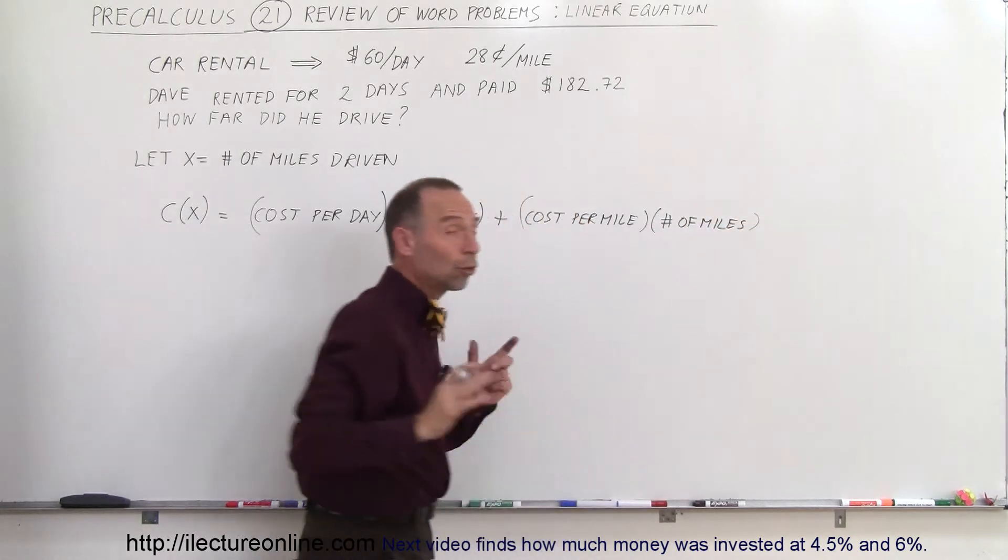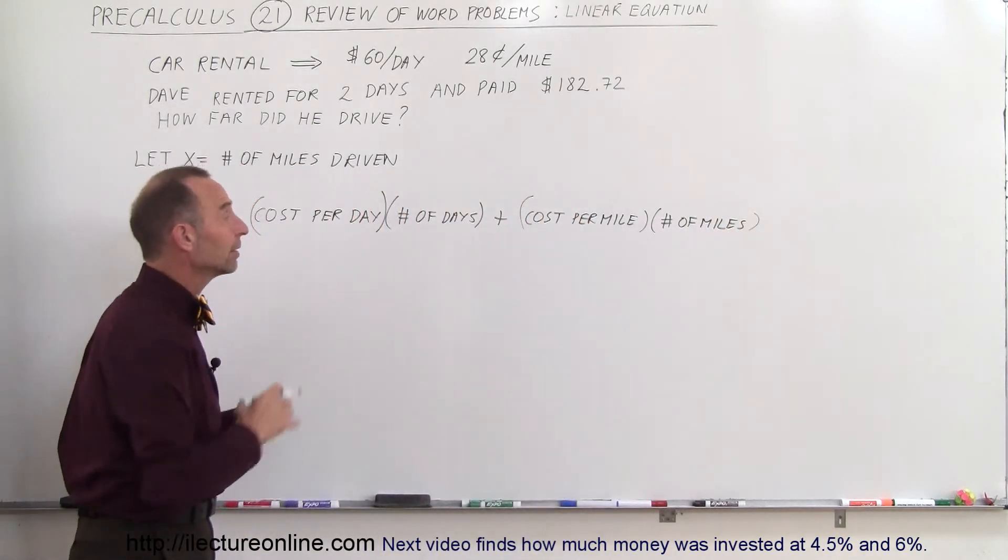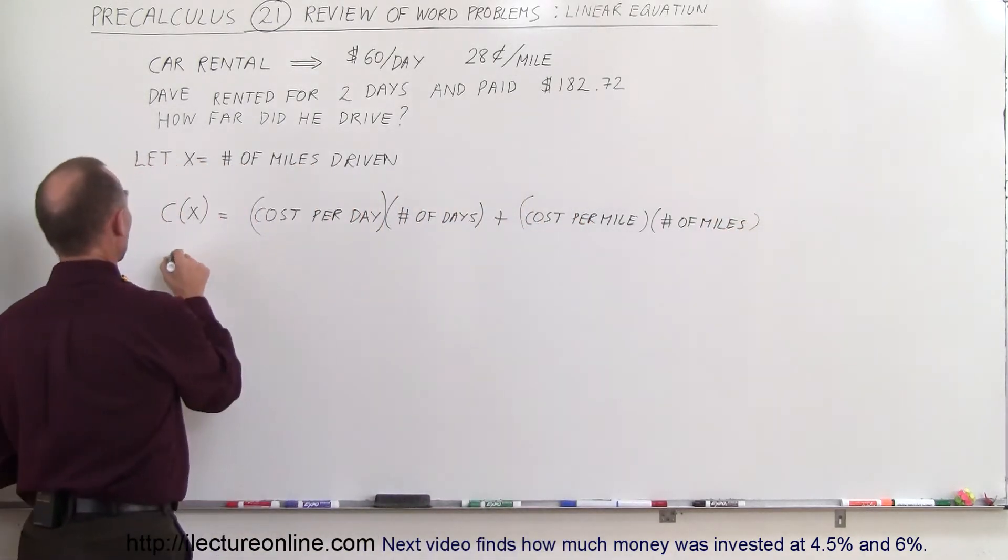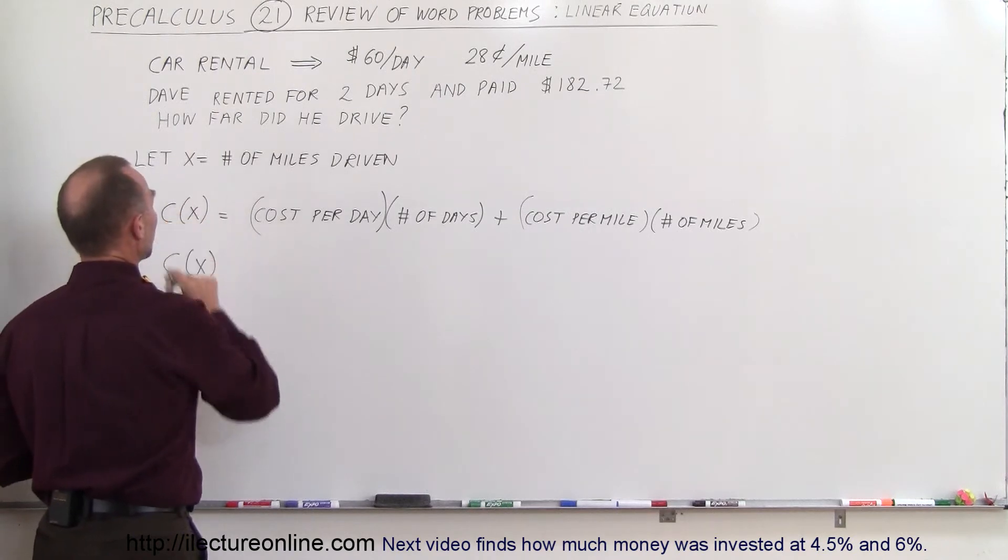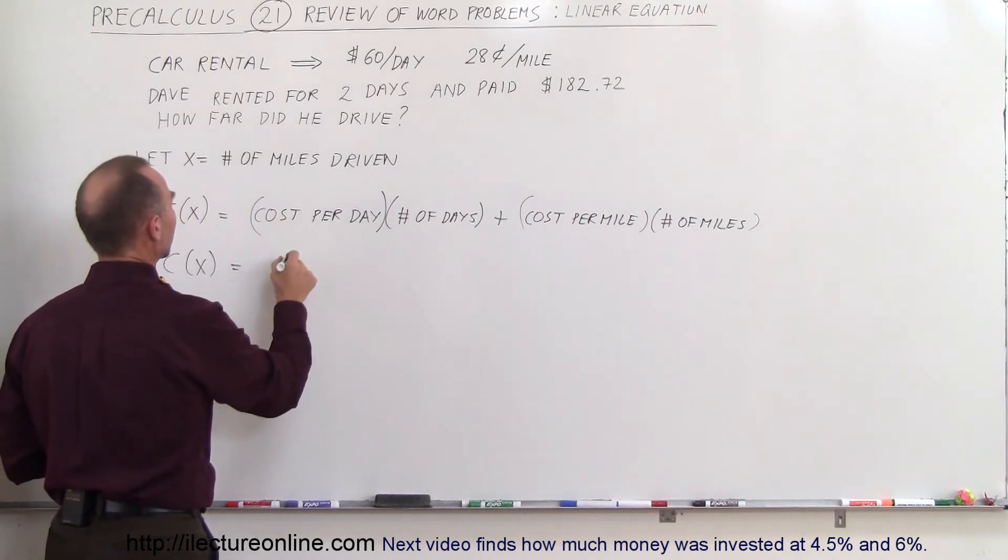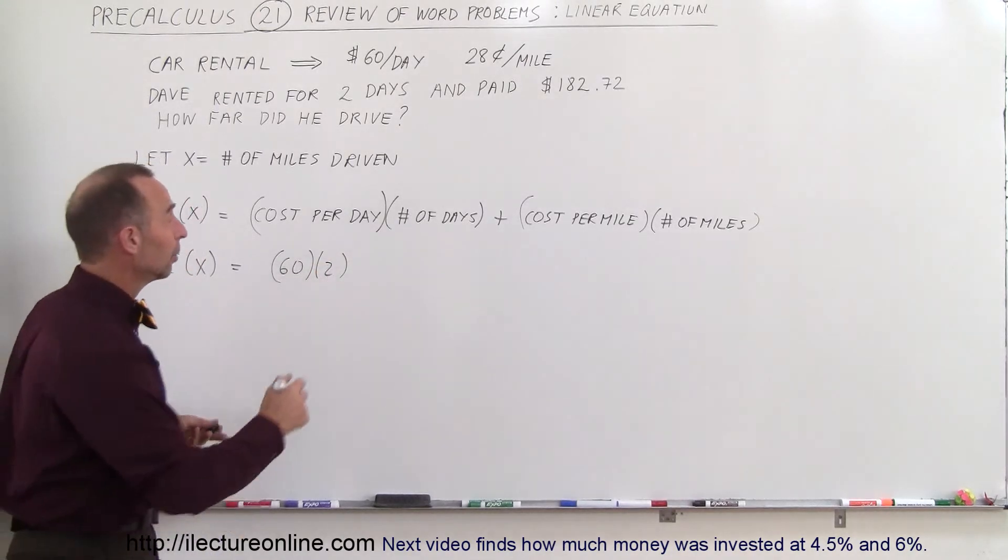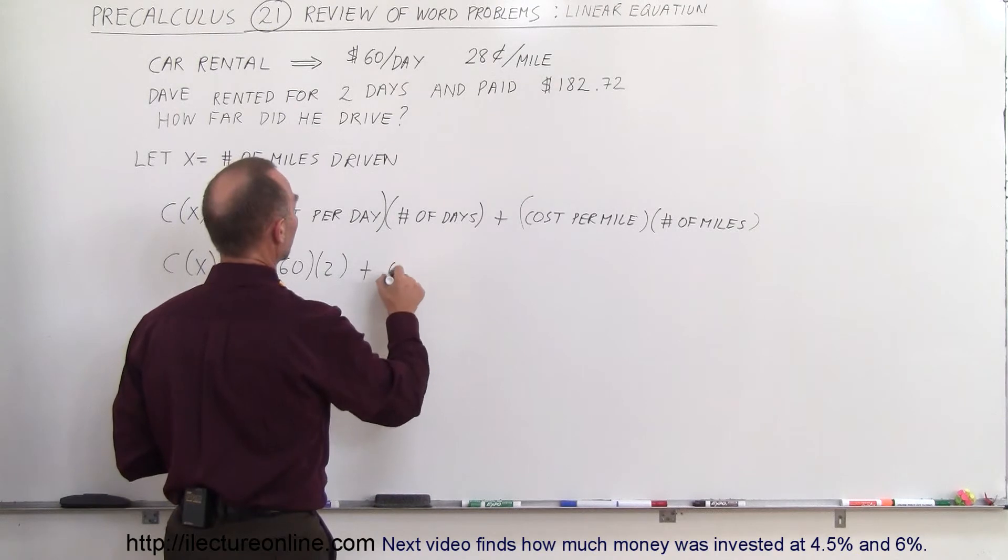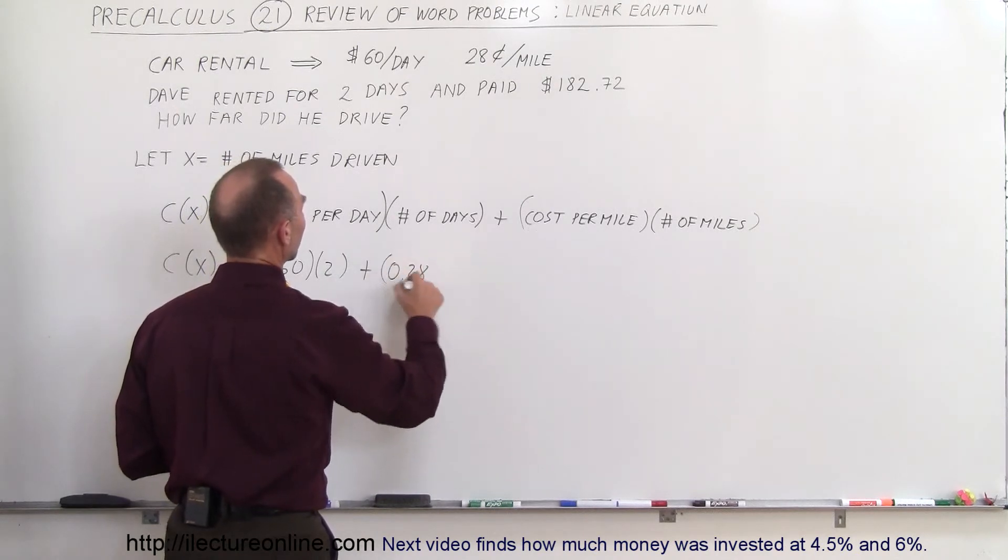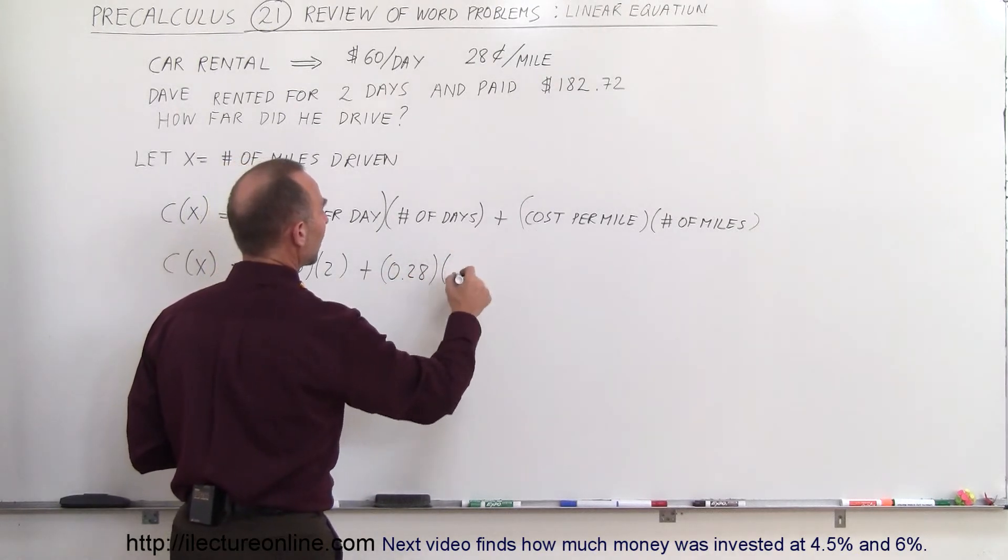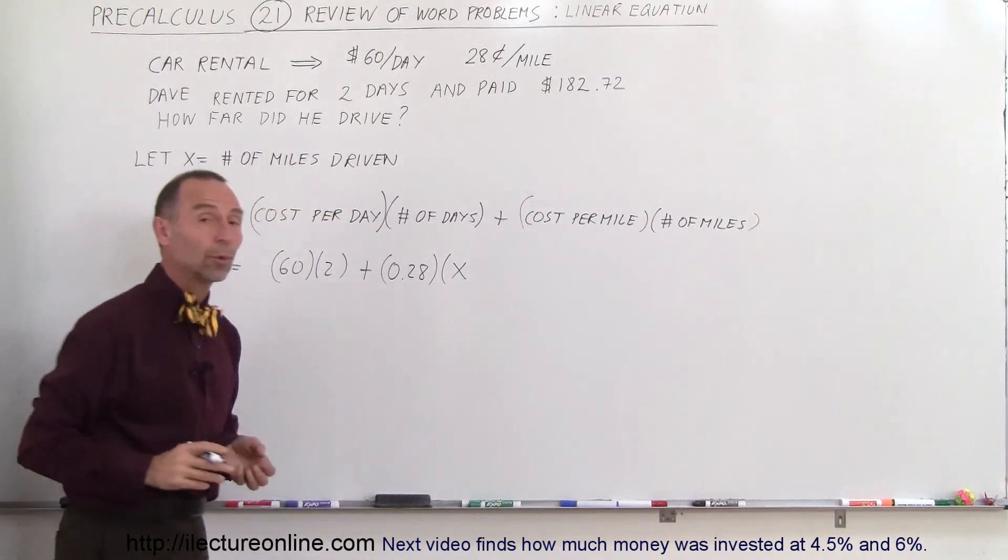So that represents the total cost for renting this car. So the cost as a function of X, where X is the number of miles driven, is equal to the cost per day is 60 times the number of days which is 2. So that's a fixed number, we know what that is, plus the cost per mile which is $0.28 times the number of miles which is X. So there's our equation.